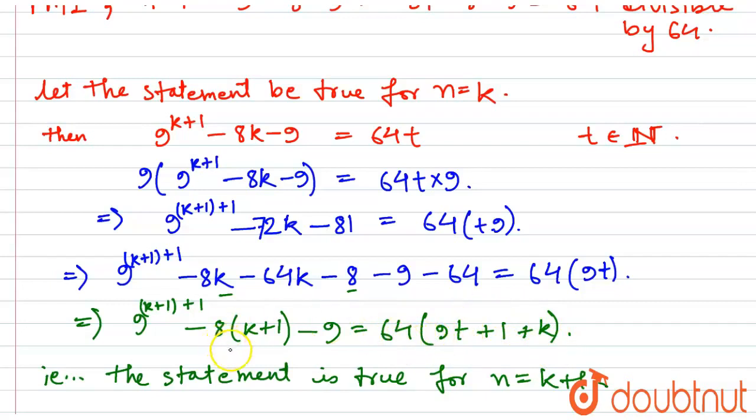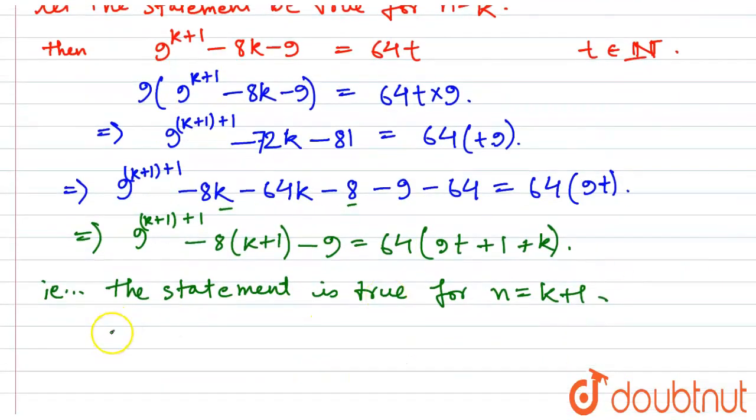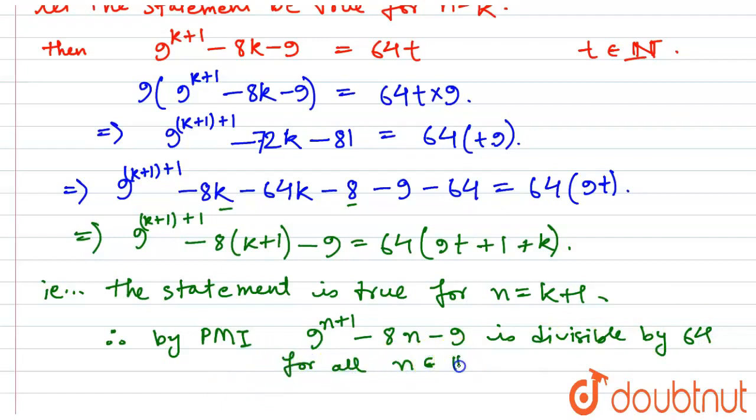Therefore, 64 divides the statement for n equals k + 1. Therefore, 9^(n+1) - 8n - 9 is divisible by 64 for all n belongs to natural numbers. Thank you.